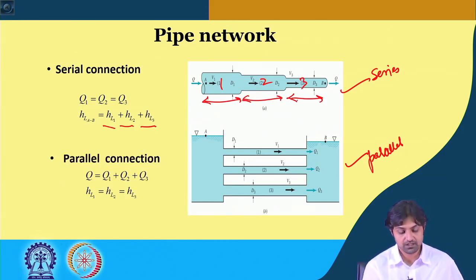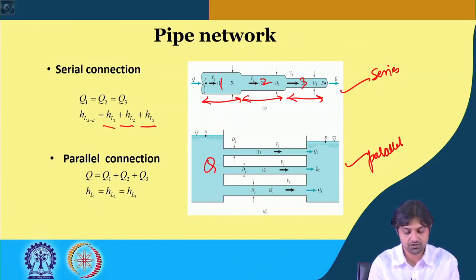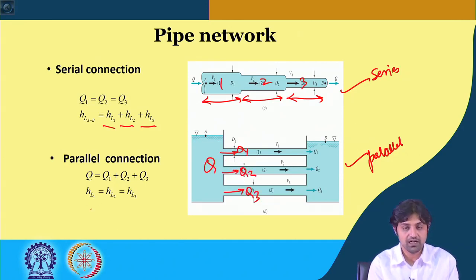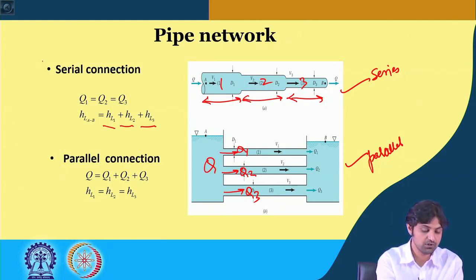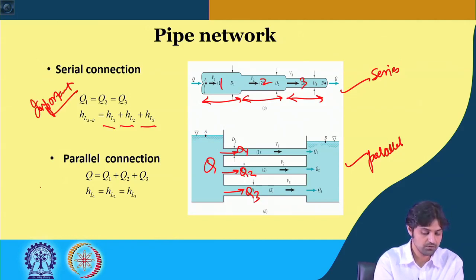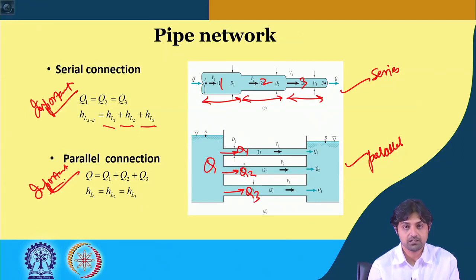In a parallel connection, the total discharge Q equals the sum Q1 + Q2 + Q3, but the head losses are equal in each of the parallel pipes. This is the important thumb rule to remember when dealing with pipe networks.